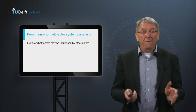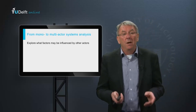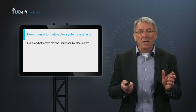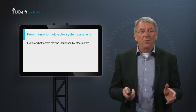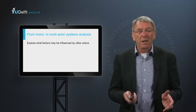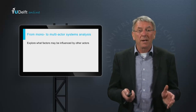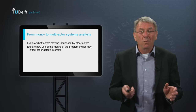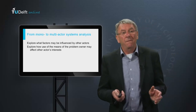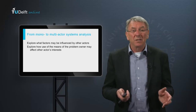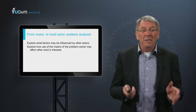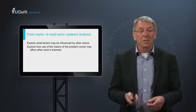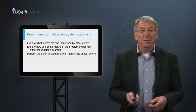I suggest the following general steps. First, start from the mono-actor system diagram and explore what relevant factors may be influenced by other actors, and who these other actors are. Second, identify what other actors may be affected by changes in system factors. These two steps provide a starting point for the third step: a more extensive actor analysis.